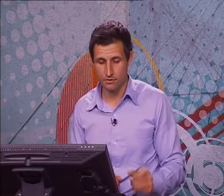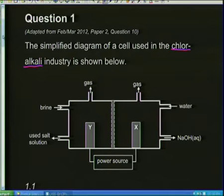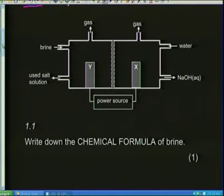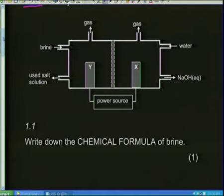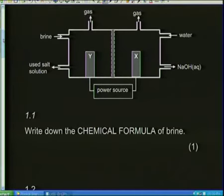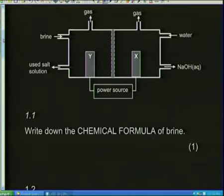I've got this cell in front of me. There are a few gases coming out, and we've got some brine, some water, and some used salt solution. Now question 1.1 is probably the most important and most commonly asked question inside the chloralkali process. It says: write down the chemical formula for brine.